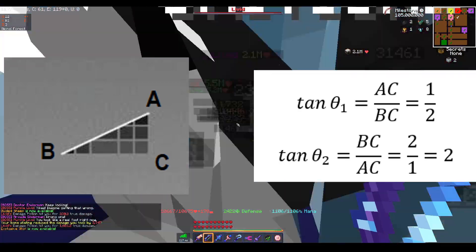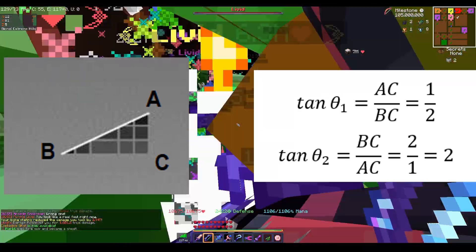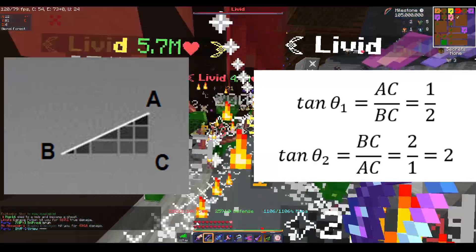For theta sub 1, the opposite is line segment AC and the adjacent is line segment BC. For theta sub 2, the opposite is line segment BC and the adjacent is line segment AC.